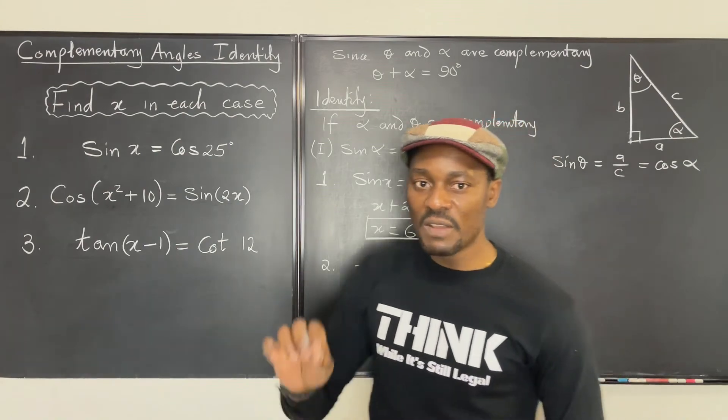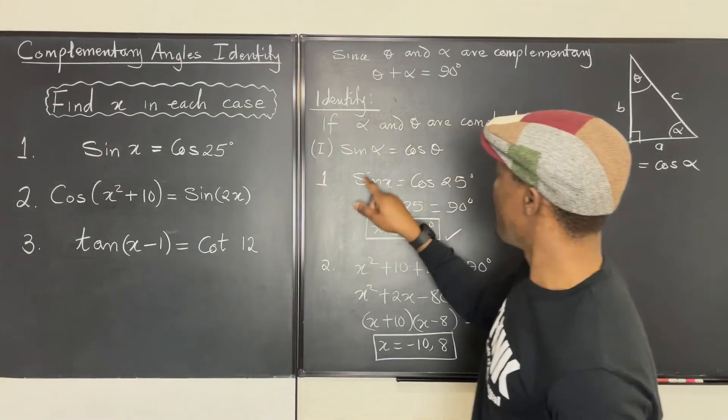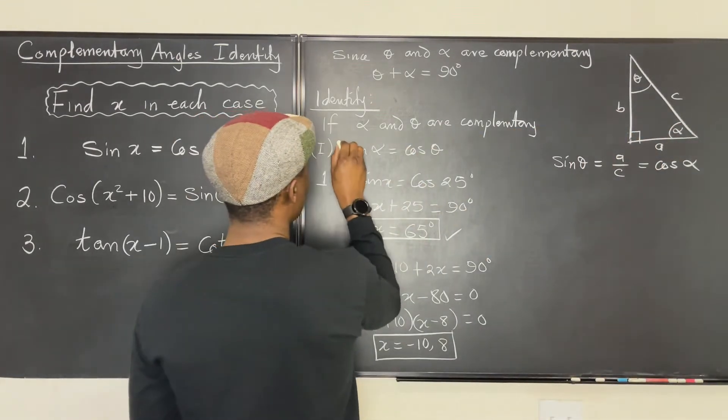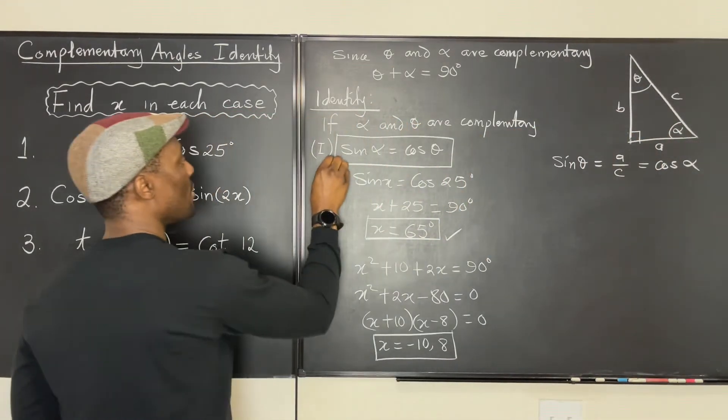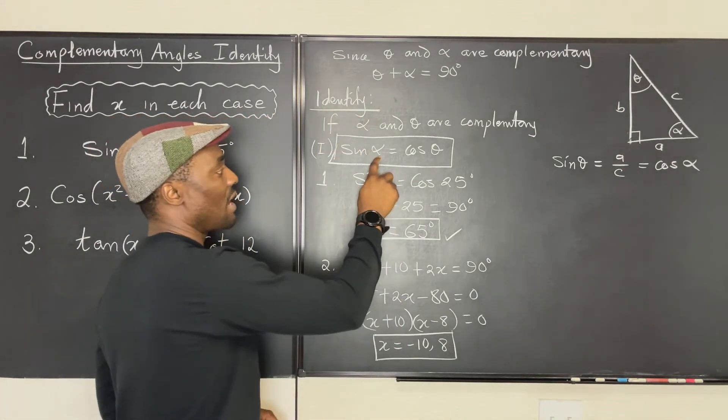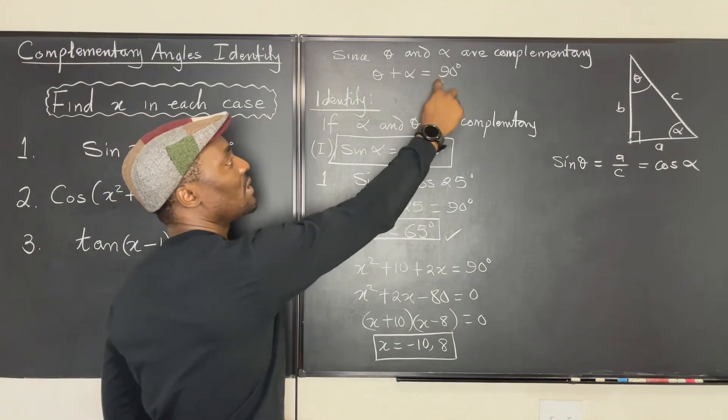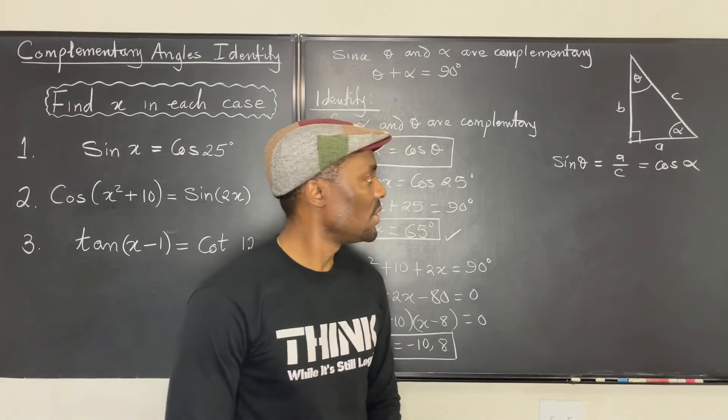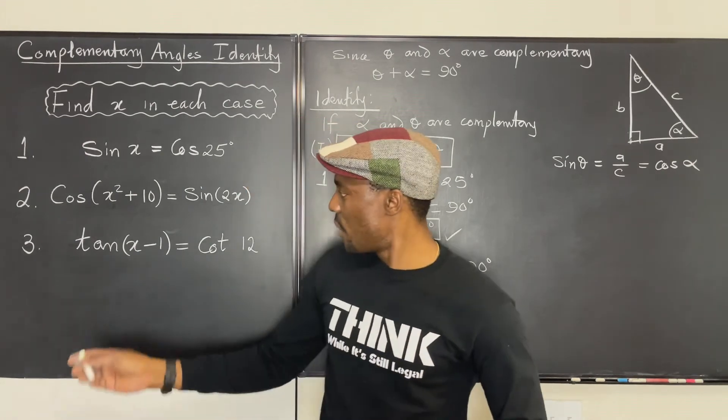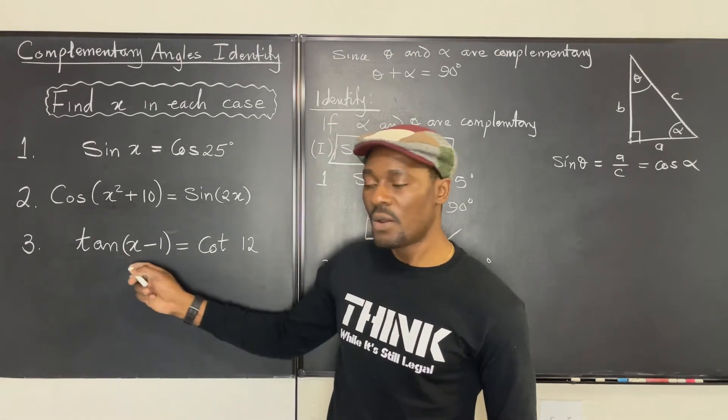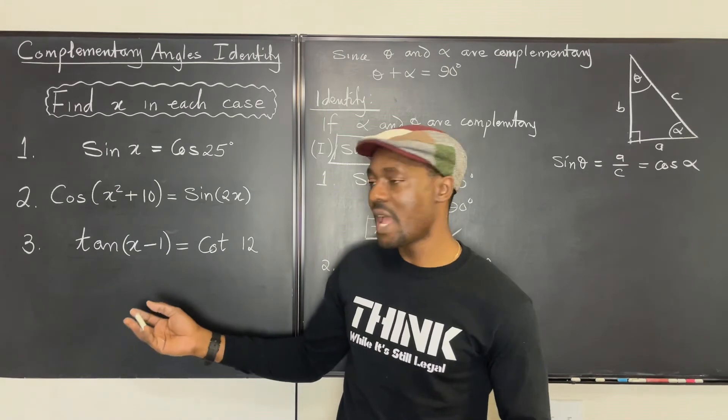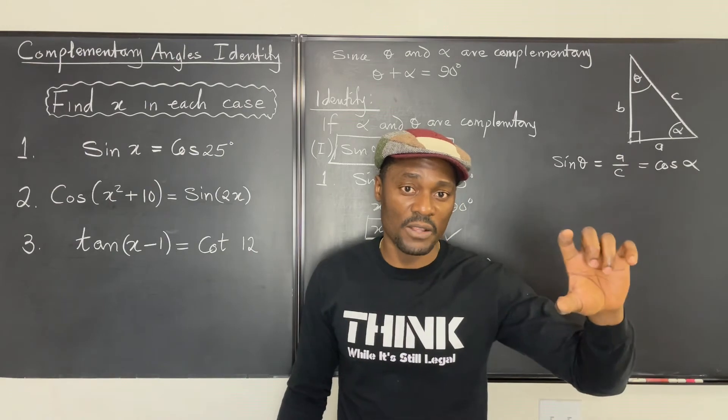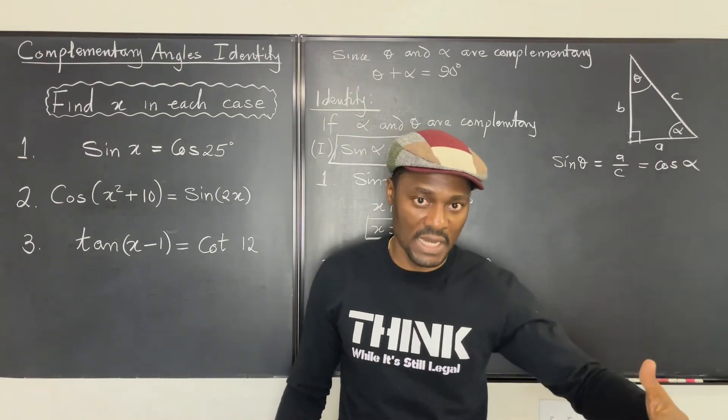We have used the first identity. So remember that sine alpha only equals cosine alpha under this condition. Now, let's see what we can do here. Because this question is no longer dealing with sine or cosine, it's telling us about tangent and cotangent. But it's the same thing. Remember that the cotangent of an angle is the reciprocal of the tangent.